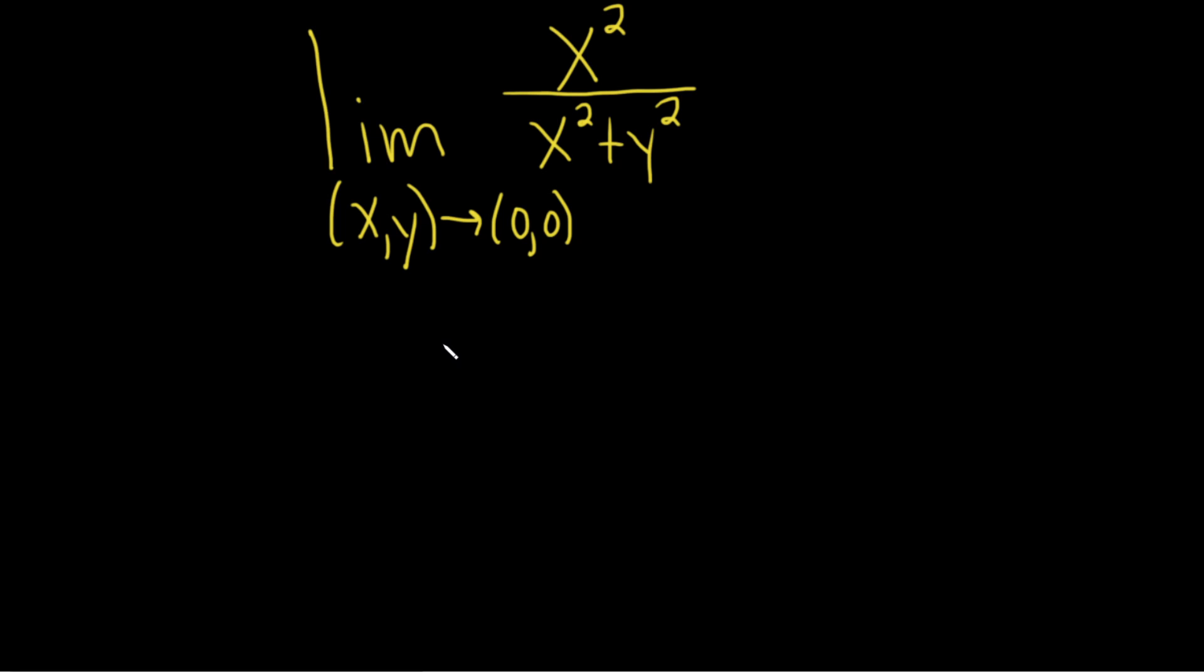Hi, in this problem we have a limit. We have xy approaching (0,0), and the function is x squared over x squared plus y squared.